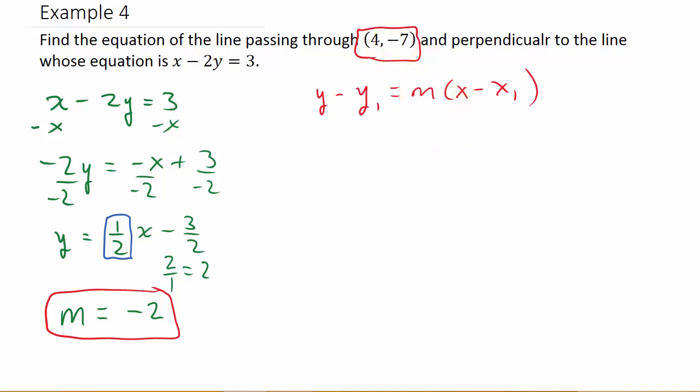Alright so we have y minus negative 7 so that's y plus 7. Remember y minus negative 7 then 2 minuses make the plus. Okay equals negative 2 times x minus 4.